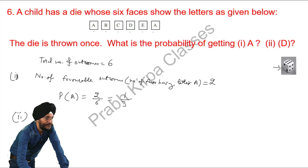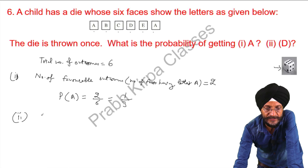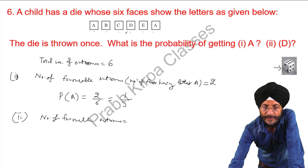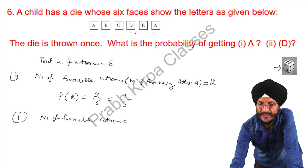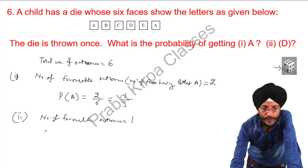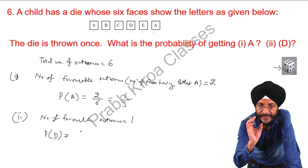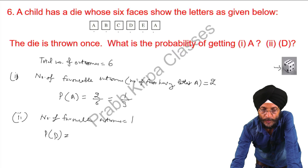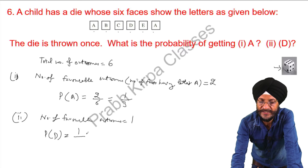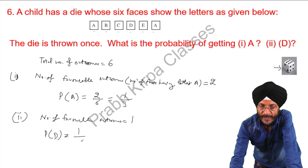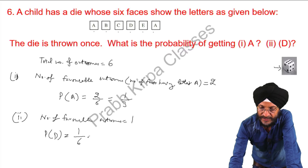Now the next part. The number of favourable outcomes for getting D: in this question, the D face is appearing only once. So the number of favourable outcomes is 1. The probability of getting D is the number of faces having letter D divided by the total number of faces, which is 6. So the probability is 1 over 6.